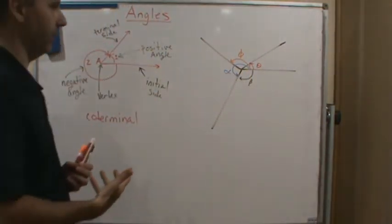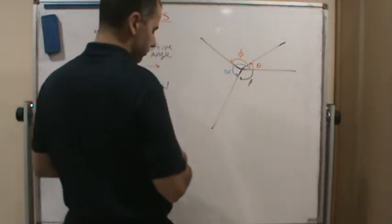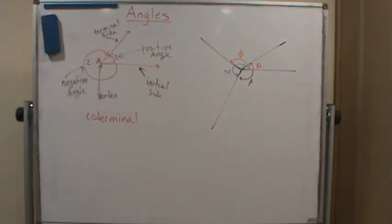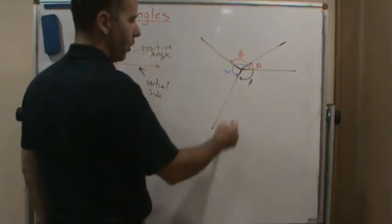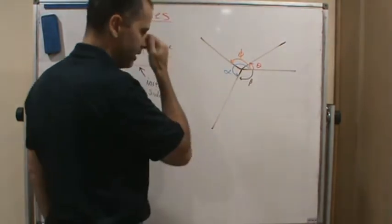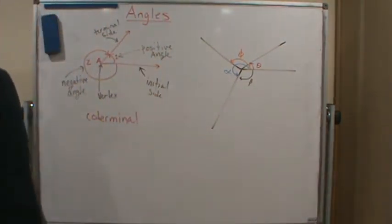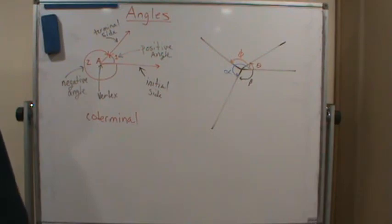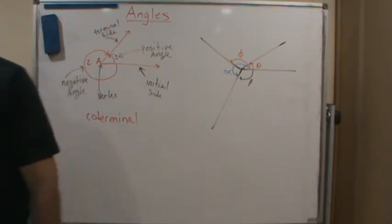Notice that angle alpha and angle beta are both coterminal, because they both measure the same angle. Coterminal means angles that have the same initial and terminal sides — they both start and end at the same spot.